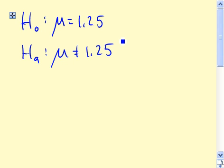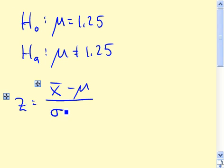The next step is to determine the value of the standardized test statistic, z. So remember, z equals x-bar minus mu divided by sigma over the square root of the sample size, n.